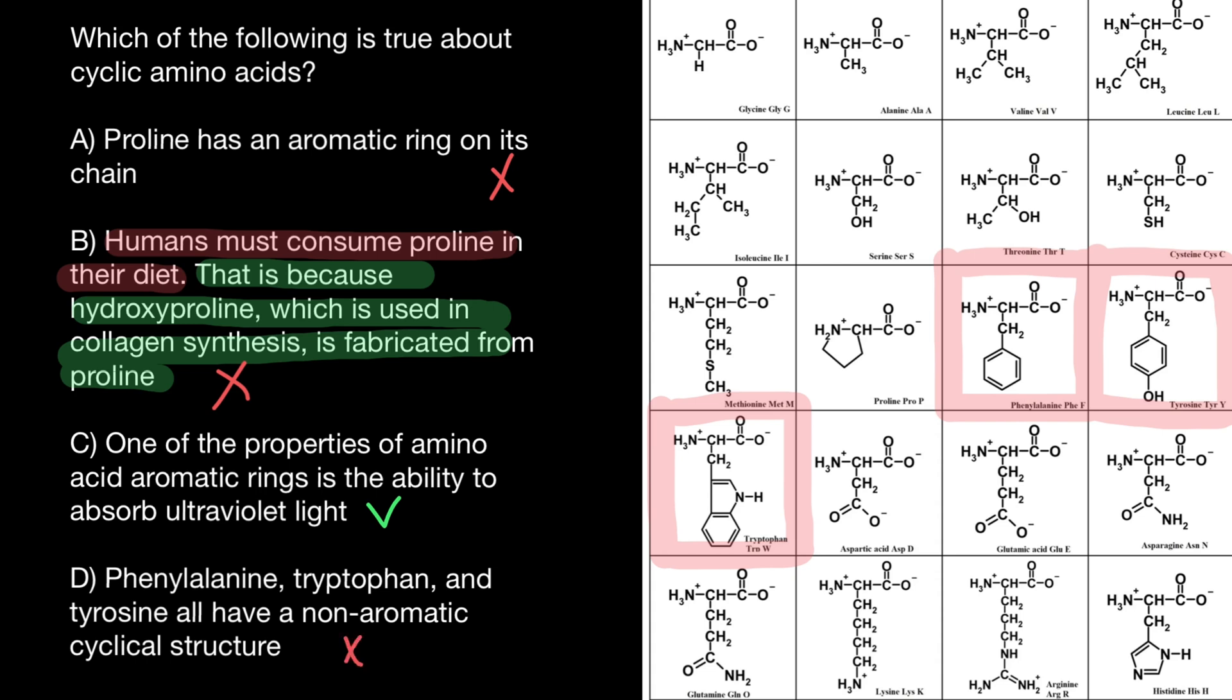So now you see the only correct answer is going to be answer C. One more time, which of the following is true about cyclic amino acids? And the only correct statement would be one of the properties of the amino acid aromatic rings is the ability to absorb ultraviolet. And this is true.